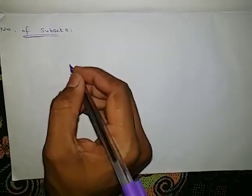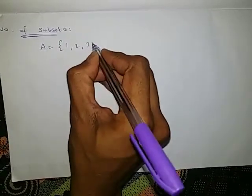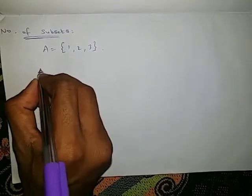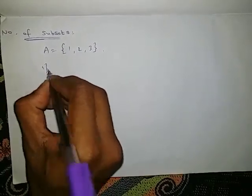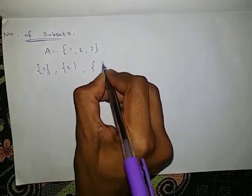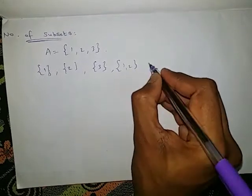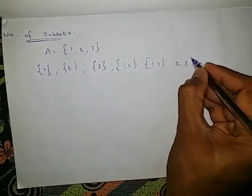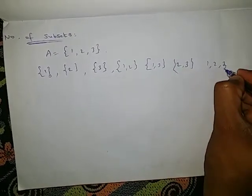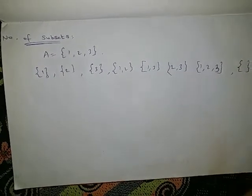Next: number of subsets. They will give a set such as A = {1, 2, 3} and ask you to write all the subsets. The subsets are: {1}, {2}, {3} as individual elements; then {1,2}, {1,3}, {2,3} as two-element combinations; then {1,2,3} as all elements together; and also the empty set.